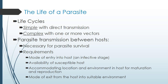The life cycle of a parasite can be simple with direct transmission — some parasites go from egg out of one host into another and develop into an adult just that simply. There's also a complex life cycle with one or more vectors, where intermediate hosts play a role. Parasite transmission between hosts is necessary for parasite survival. Requirements include a mode of entry into the host at the infective stage, a suitable host, an accommodating location for maturation and reproduction, and a mode of exit into a suitable environment.